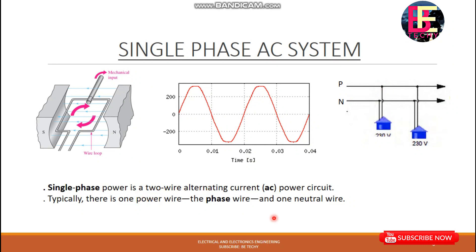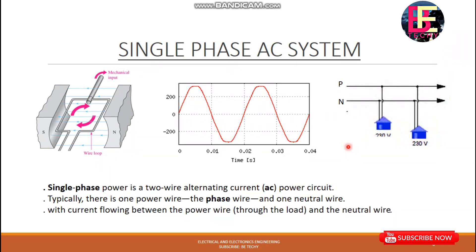This is the main voltage in a phase. The main voltage with the neutral wire gives us 2 points of voltage. If we get the power, we get the neutral wire. Then we get the phase and neutral. Typically, there is one power wire — the phase wire — and one neutral wire.